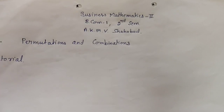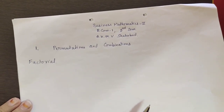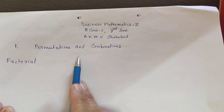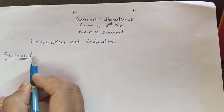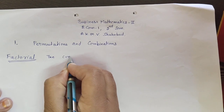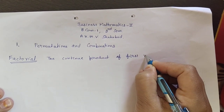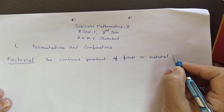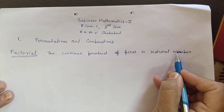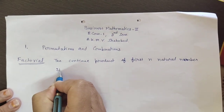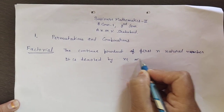Good morning. Today we will start Business Mathematics, second chapter. The first chapter is Permutation and Combination. The first definition in this chapter is factorial. Factorial is the continued product of first n natural numbers, and it is denoted by n factorial, or using the notation n with an exclamation mark.